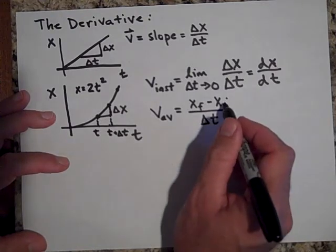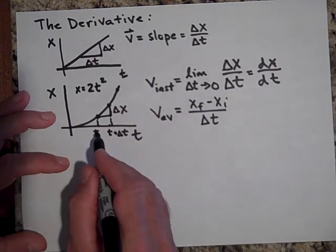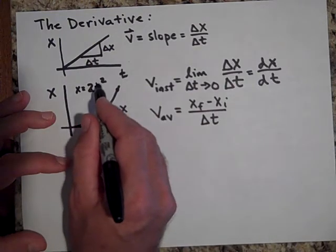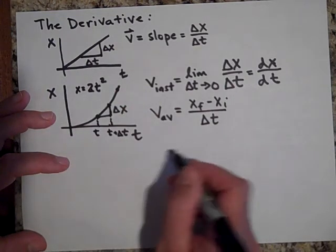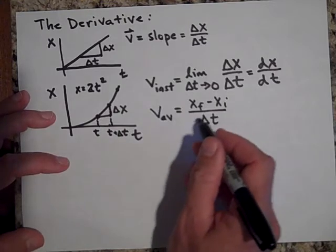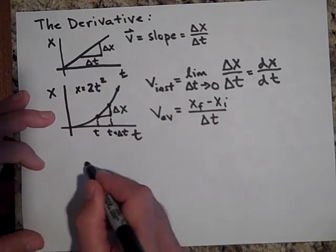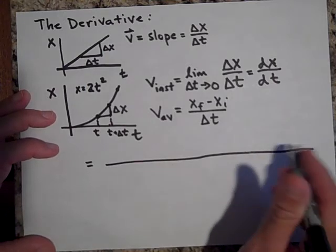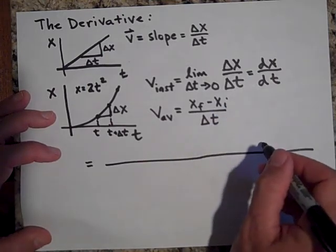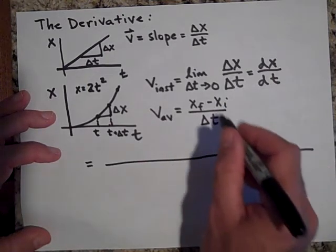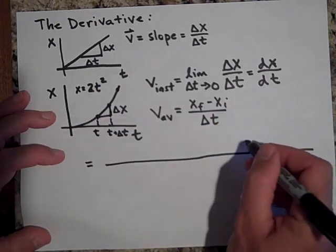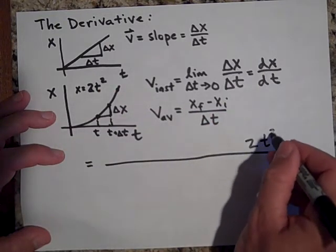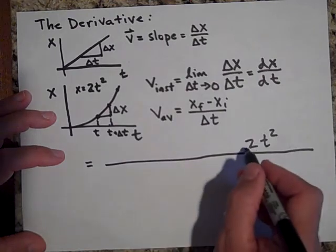For x initial, that's going to be, when I put t into there, it's just 2t squared. So let's write that. This is going to be a long next step. So I'm going to start over here, put a big long line in there. And for x initial, I'm going to put in, x initial is just 2t squared. That's x initial.